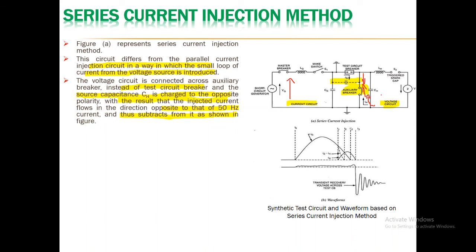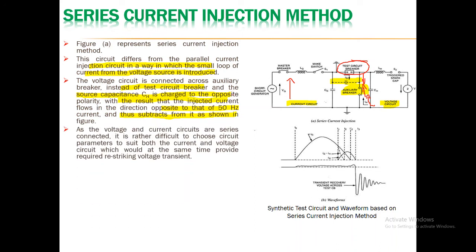Both currents are in opposite directions and will subtract from each other, as seen in the figure across the auxiliary breaker. The test breaker is connected in series between the current circuit and the voltage circuit, whereas in the parallel injection method the circuit breaker under test is connected across both circuits. In the series current injection method, the currents at the auxiliary breaker cancel each other out. Since the voltage and current circuits are in series through the breaker, it is rather difficult to choose circuit parameters to suit both simultaneously while providing the required restriking voltage transient.